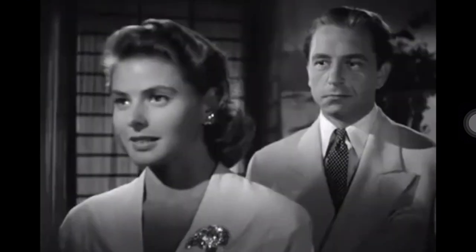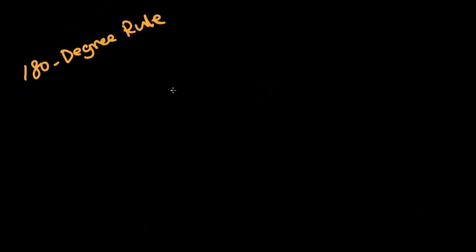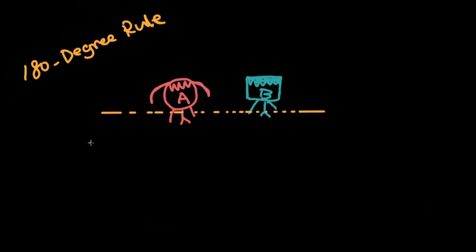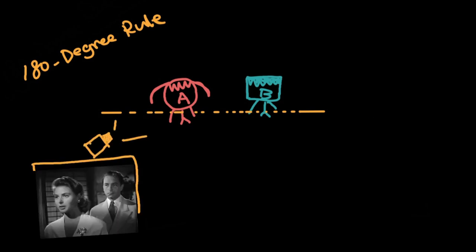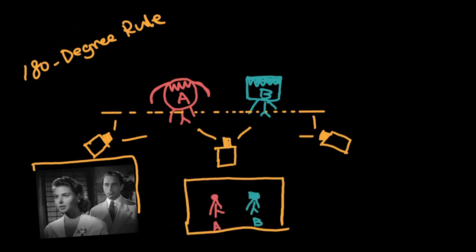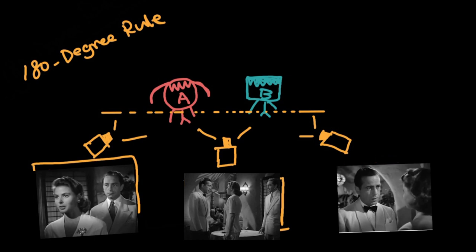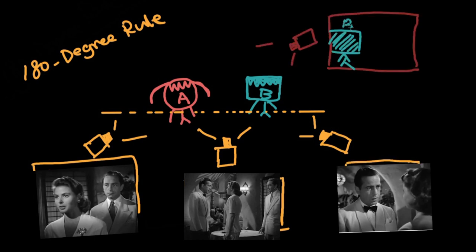The 180-degree rule is one fundamental law of editing and is often used in conversation. By remaining on one side of this line, the camera ensures that screen direction remains constant. That is, if one character stands on the right of the frame and another on the left, those characters retain their relative screen position from one shot to the next.